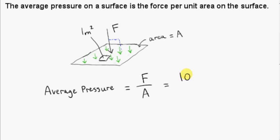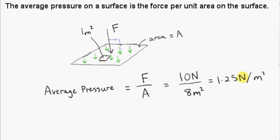For example, if F is 10 newtons and A is 8 meters squared, then on average the force on each square meter of this surface is going to be 1.25 newtons — so 1.25 newtons per square meter. Of course, on some square meters the force is more than 1.25, and on others it's less. This is just an average. We can also write this as 1.25 N·m⁻², and this can also be written as 1.25 pascals.